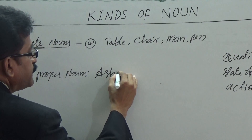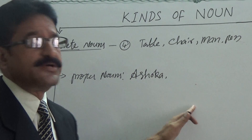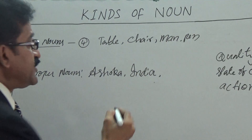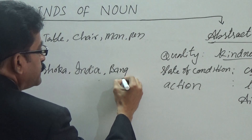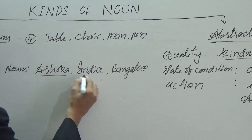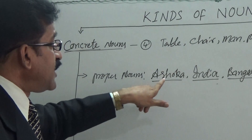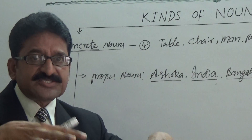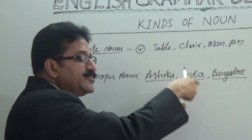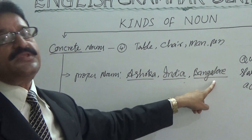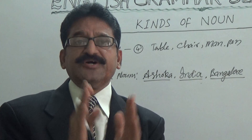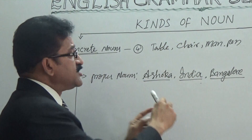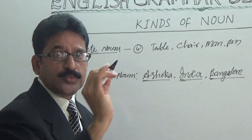For example, Ashoka — the name of a particular person, a particular emperor. India — the name of a particular country. Bangalore — the name of a particular place. These individual and particular names are called proper nouns. This country is called India, not any other one — it is the particular and individual name of a country. Proper nouns generally start with a capital letter and should always start with a capital letter.